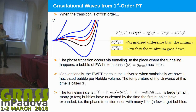For instance, we have a scalar field — typically the Higgs — and at high temperature, the finite-temperature potential of this particle has a particular shape, so the particle has no vacuum expectation value. At some point, you decrease the temperature and see the potential changing. At the critical temperature, the two minima are degenerate.